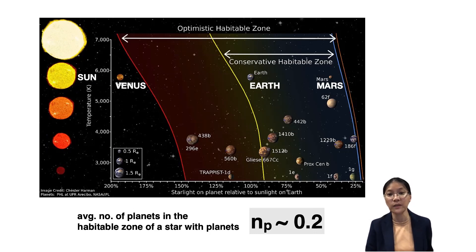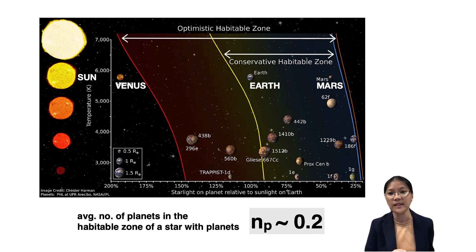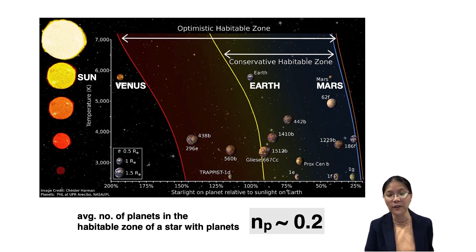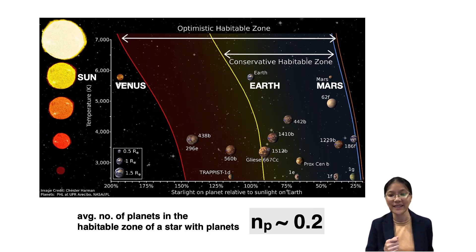You may notice that Venus is technically not in the habitable zone of the Sun, but you may have heard some news of a sign of life — a biosignature — detected on Venus, and we will discuss this exciting discovery as part of the next part of this lecture.